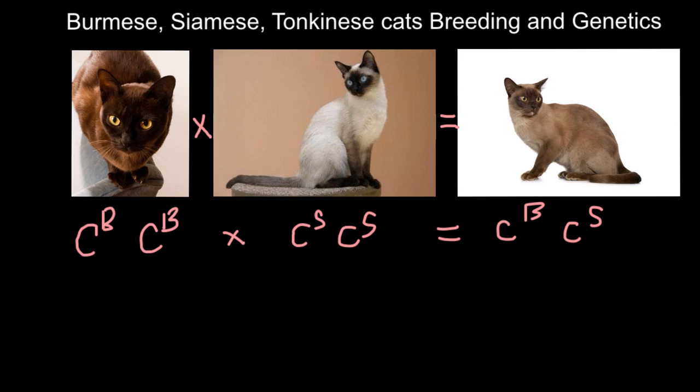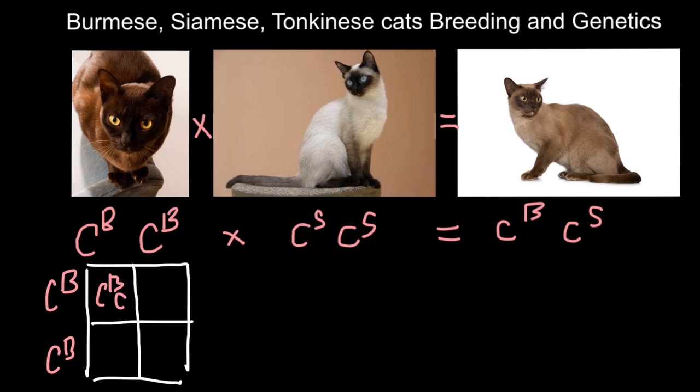If we cross Burmese with Burmese, the genotypes would be the same. If we build a Punnett square, as you see, all the litter would have the same genotype: C^B C^B for both alleles. Of course, we wouldn't see any variation of the color pattern in the litter.